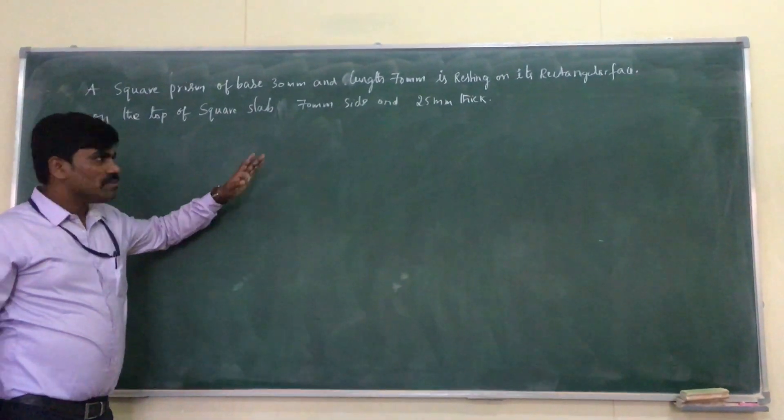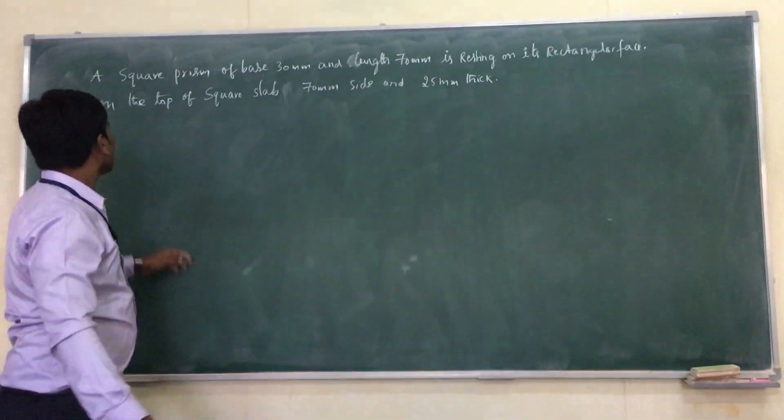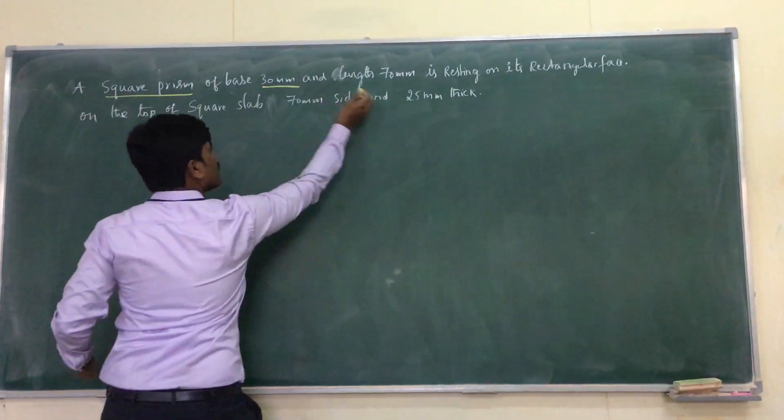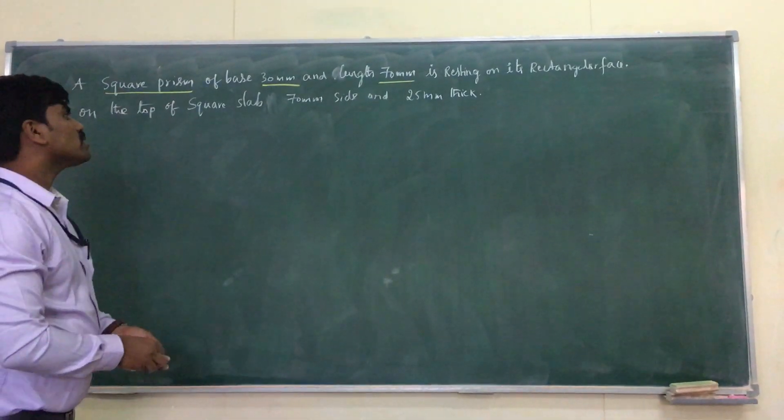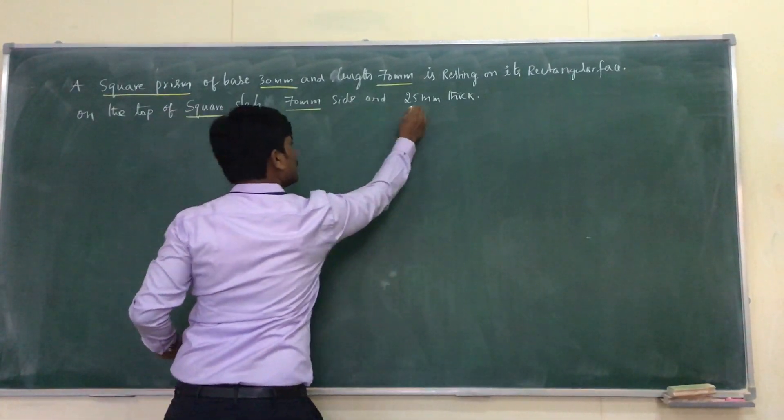It's a question paper problem from today's exam in the morning. Now it's a square prism, base 30, height 70, solid number 2. A square slab of 70 side continuity.